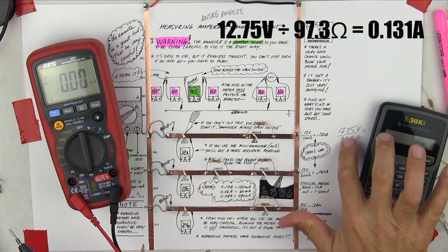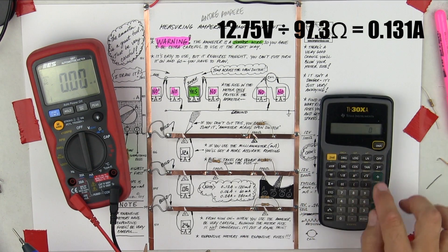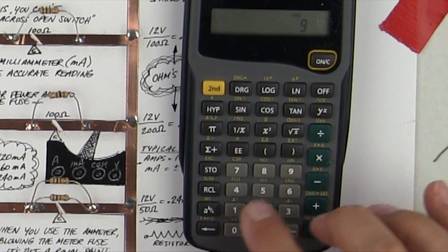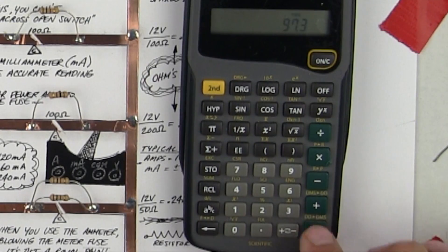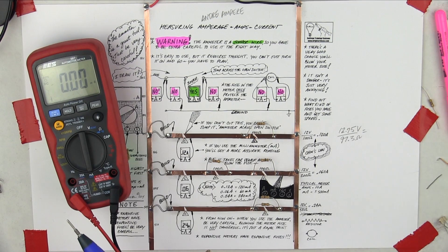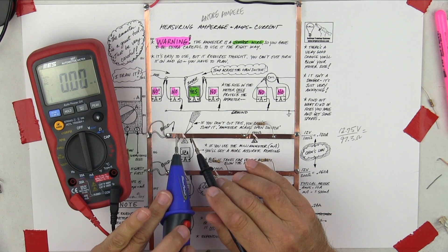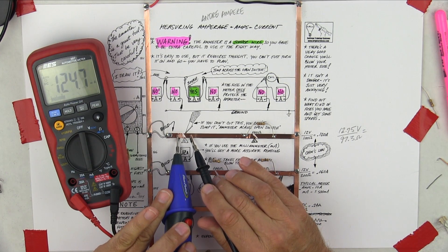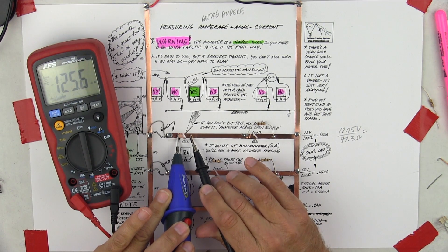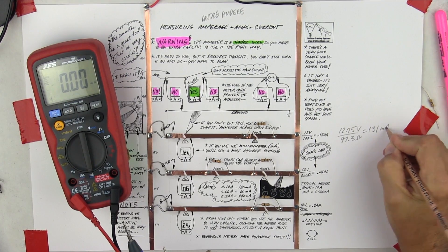Let's see if Ohm's law works. So we have 12.75 volts of pressure pushing current through 97.3 ohms of restriction. So 12.75 divided by 97.3 equals 0.131. So that would be 131 milliamps. And let's see how close we are. 124.8, 125. So I calculated 131. I should have written that down, huh?